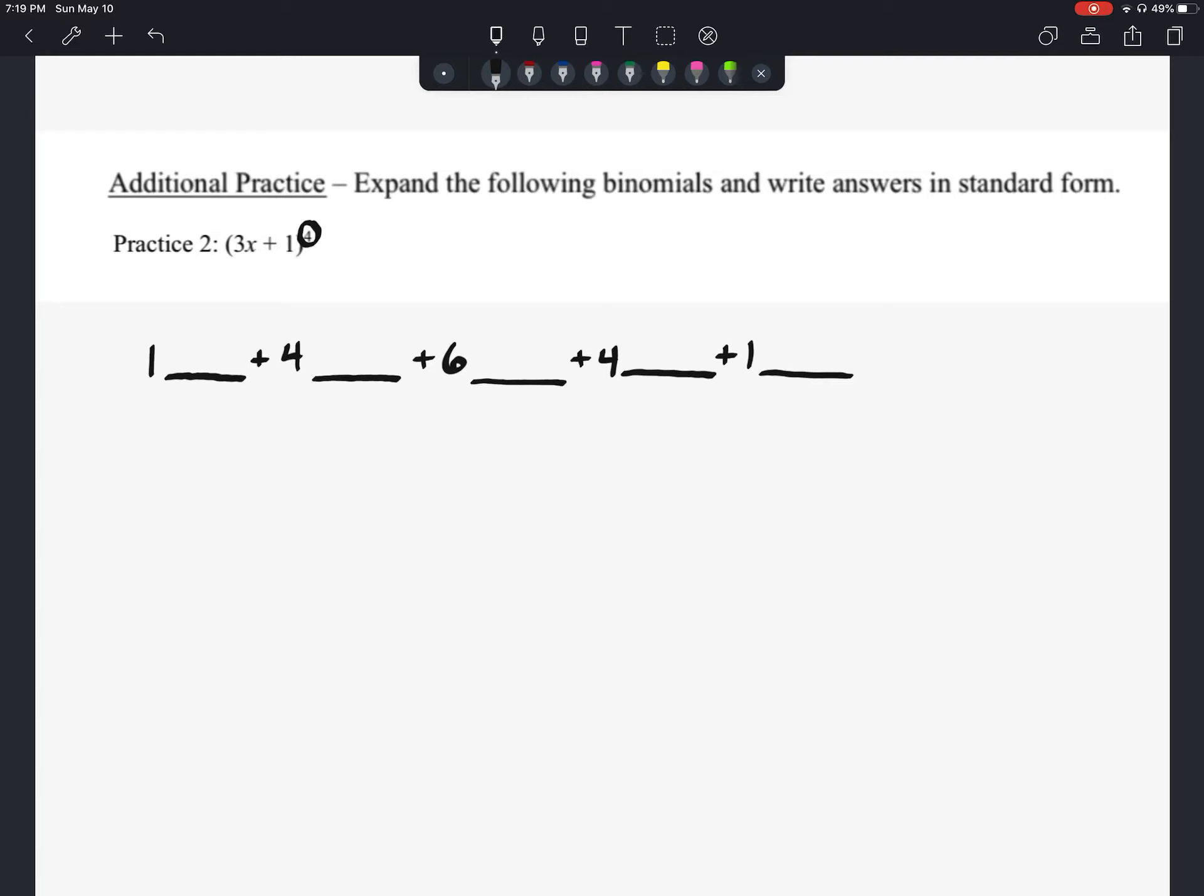So now we're just going to take it here and let's put in our variables. So remember, this is like a plus b to the fourth to start. So we have a to the fourth, a to the third, a to the second, a, and then we have b to the zero, b to the first, b to the second, b to the third, and then b to the fourth.